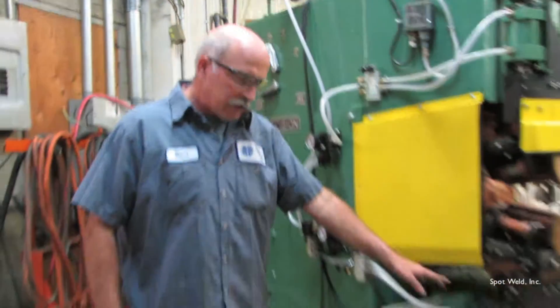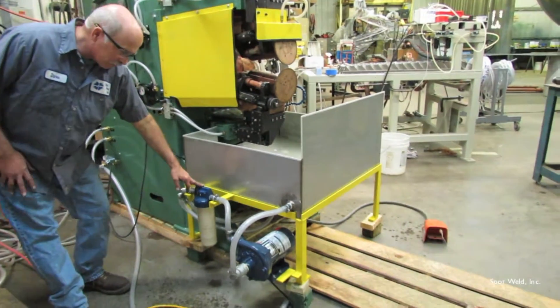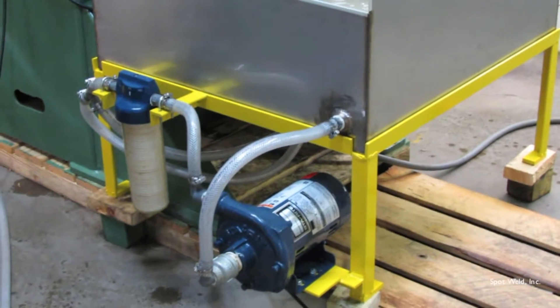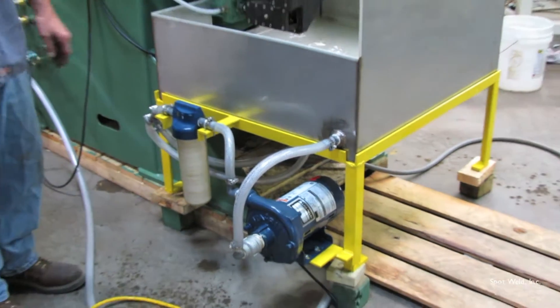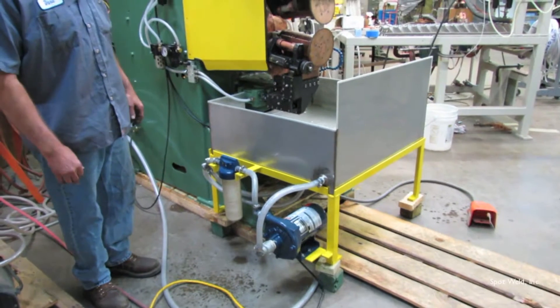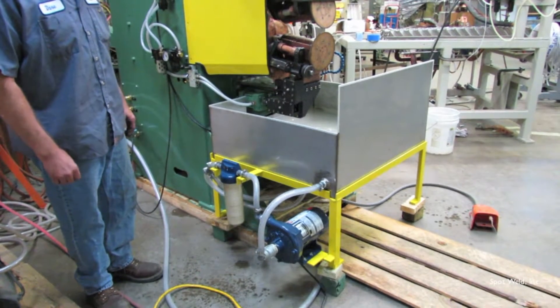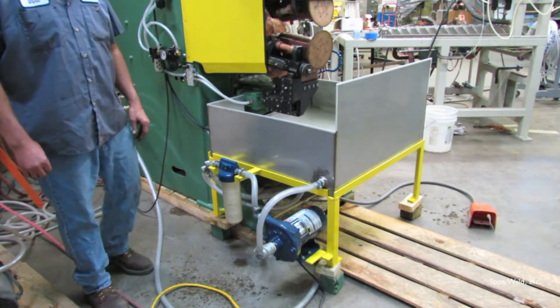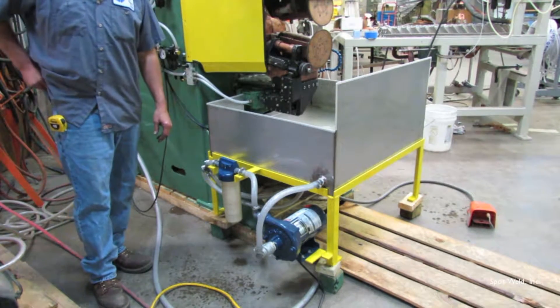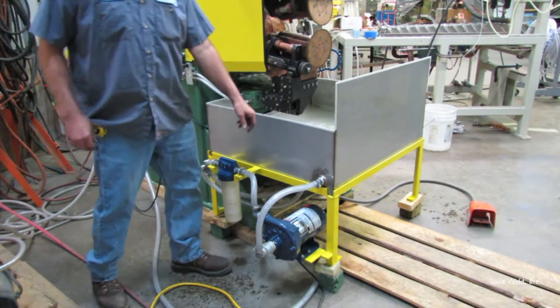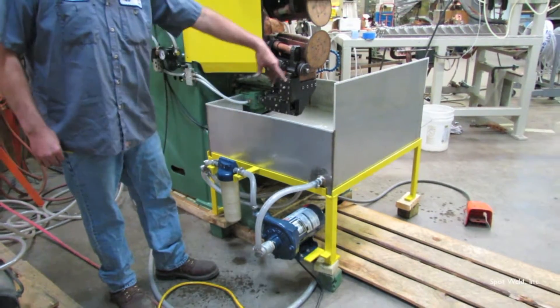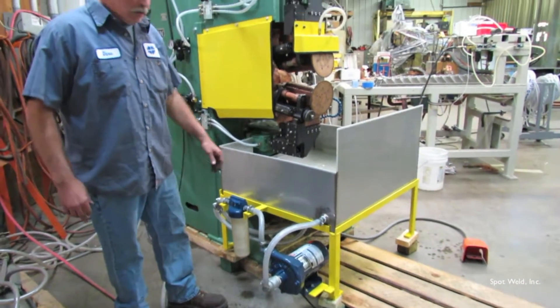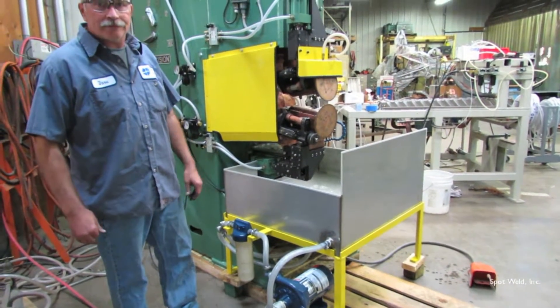Also on our external water, we have a filter that will keep your water clean so nothing gets clogged up on your wheels. And underneath it, there's a heat exchanger which you will plumb your cool water to the one side that's open for you.